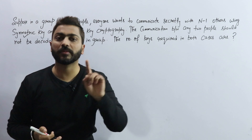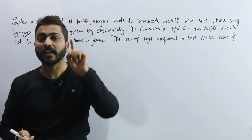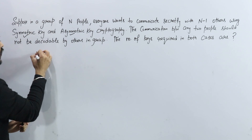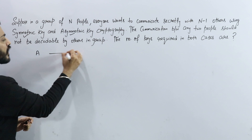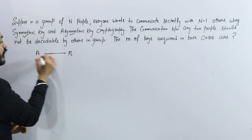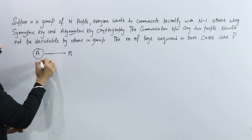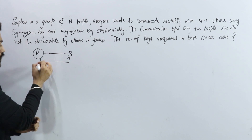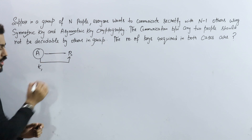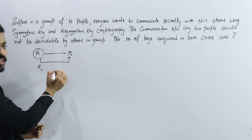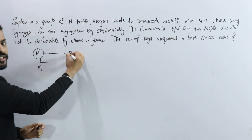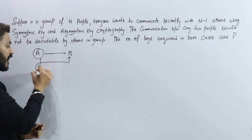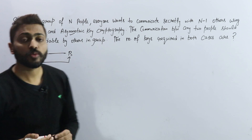Symmetric means same key — we use the same key for both encryption and decryption. For example, if A and B are connected, and A encrypts a message using key 1, then B also uses the same key 1 to decrypt it. That is the meaning of symmetric — same key.